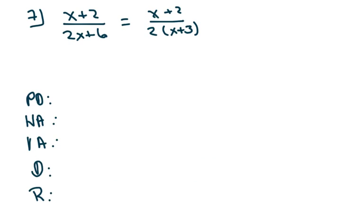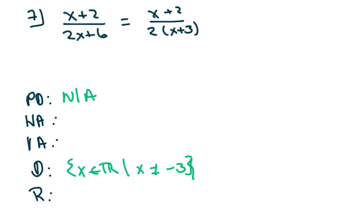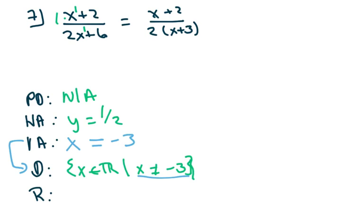Two more. The domain is all real numbers, but x cannot be negative three. I don't have a point of discontinuity because there are no factors to cancel. The horizontal asymptote: the degrees are the same, so I divide — horizontal asymptote at y equals one-half, dividing the lead coefficients. Therefore the vertical asymptote is x equals negative three. The range is all real numbers such that y cannot be one-half.